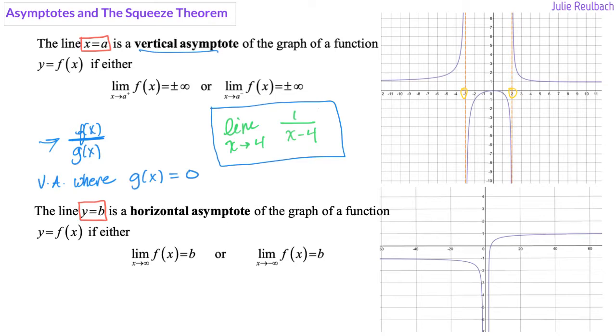Remember, an asymptote breaks a function, and it's always trying to get closer. The function is either going to positive infinity or negative infinity near the asymptotes, near every asymptote. And this is the same on this next one.